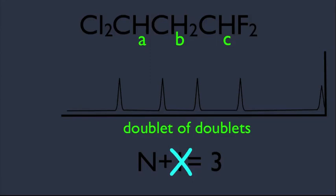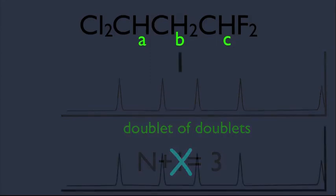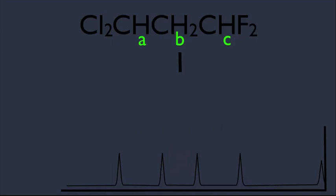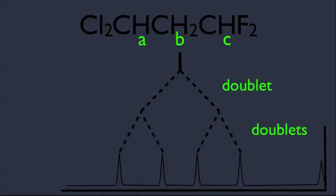In summary, the A hydrogen on the left takes the B signal and splits it into two — a doublet. Now we have two peaks. Then the C hydrogen on the right also causes B to doublet, but it's splitting those two peaks that were created by the A hydrogen into doublets themselves. That's why we call this a doublet of doublets.